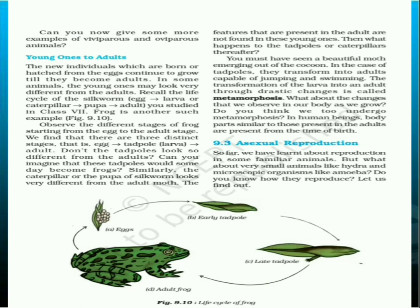In some other animals, like the silkworm we learned about last year, there are many different stages. The egg gets converted into a caterpillar, the caterpillar becomes a pupa, and the pupa becomes a silk moth. When you look at these four stages, you can see that one stage is completely different from the other — the pupa looks very different from the silk moth.